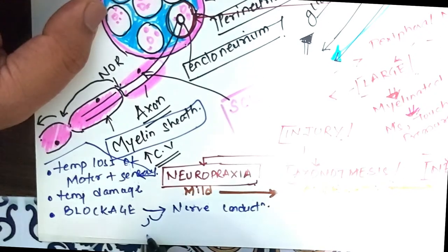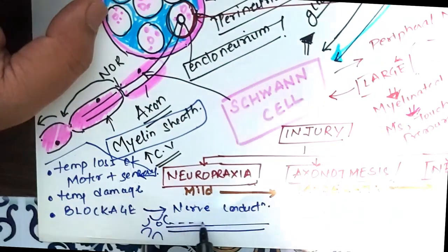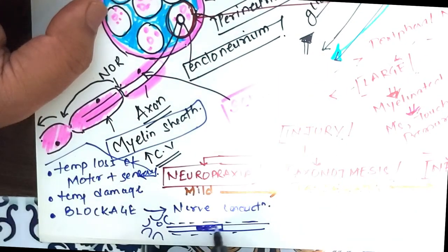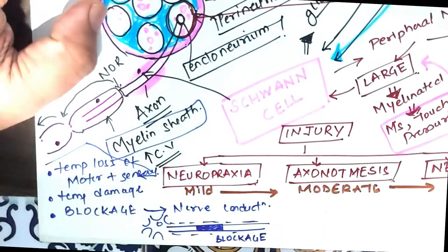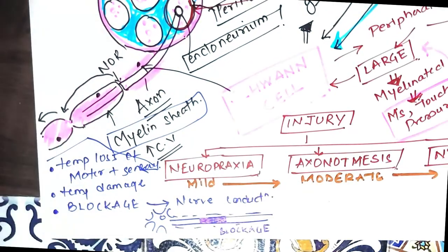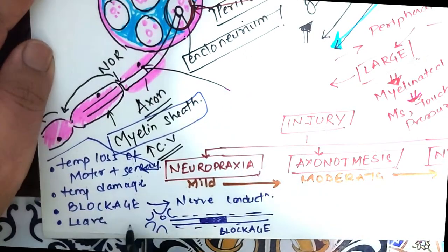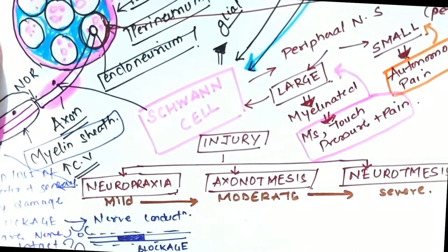The most common example of this neuropraxia is sciatica, where the sciatic nerve gets impinged or compressed in the tight piriformis muscle, or it could get impinged externally in the narrowed intervertebral foramen because of degeneration of the spine. So that blockage restricts the conduction of the nerves.